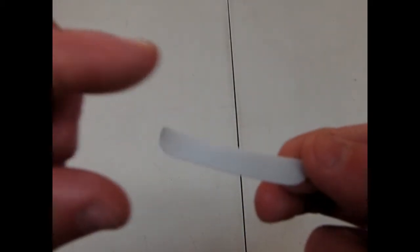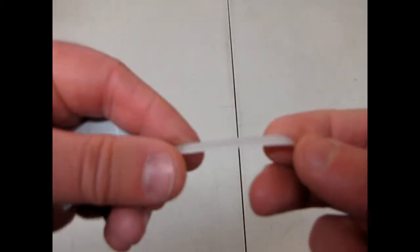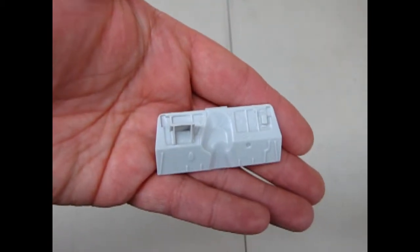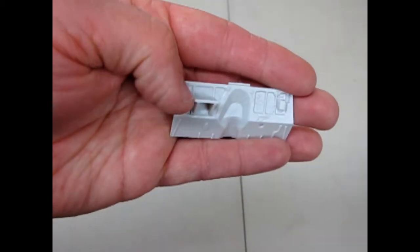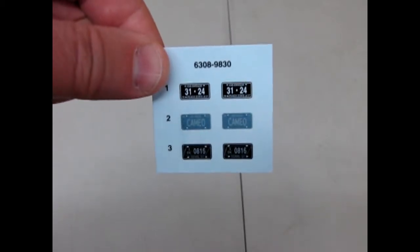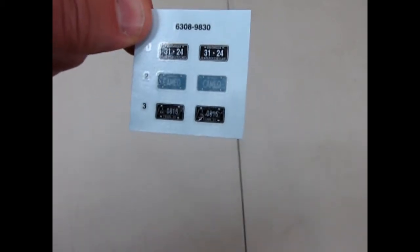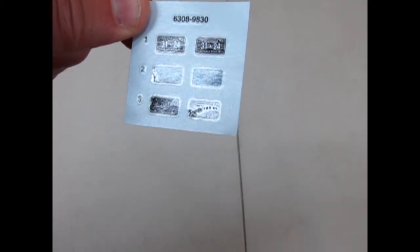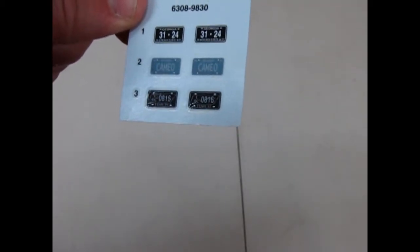This is our little sun visor that goes on top of the cab. And then we have our firewall here with some very nice detail and a little shelf for the battery to sit on. And finally they give us three license plates. 3124 from Georgia. The Nevada Cameo. And it looks like a Tennessee license plate, 0816.